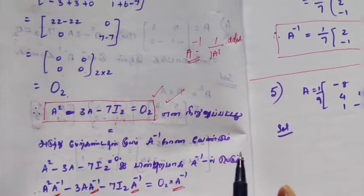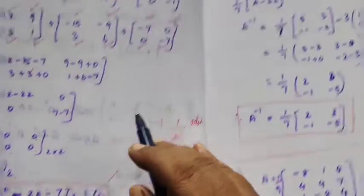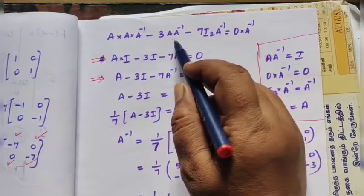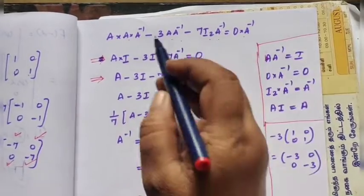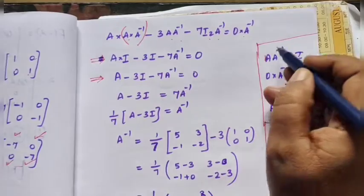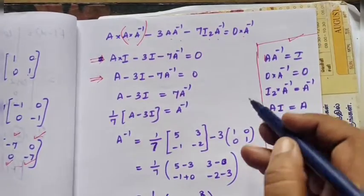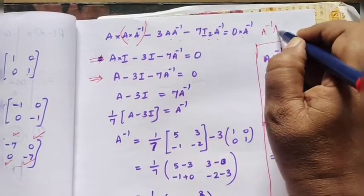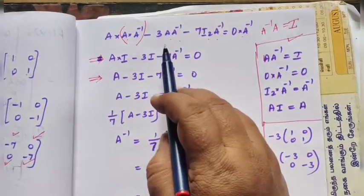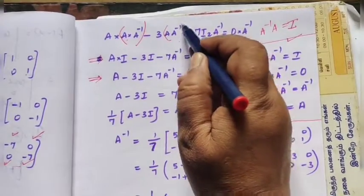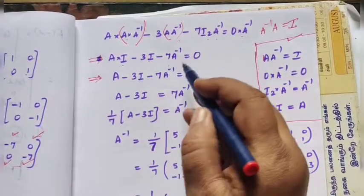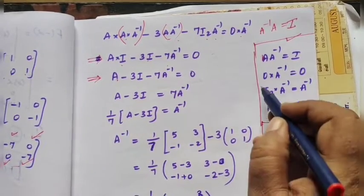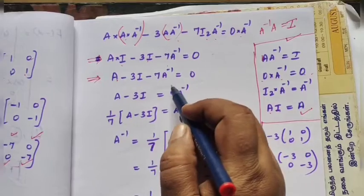Now A² is A into A. We apply A inverse. A times A inverse equals the identity. This is the formula. A inverse times A equals I. A into I equal to A. 0 into something is 0. So this is how to write it.